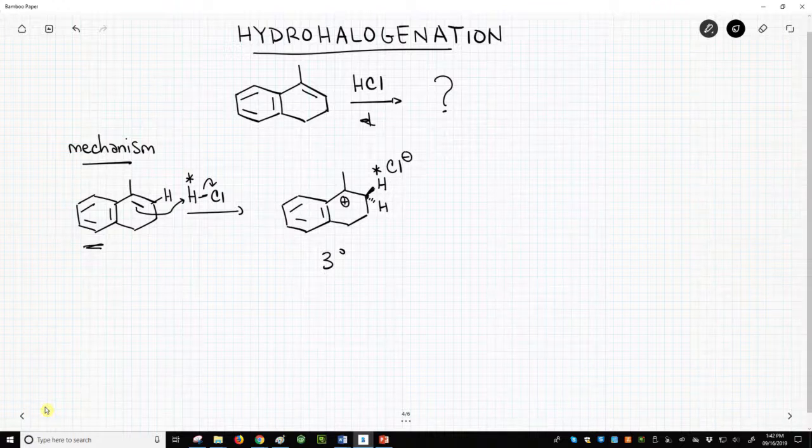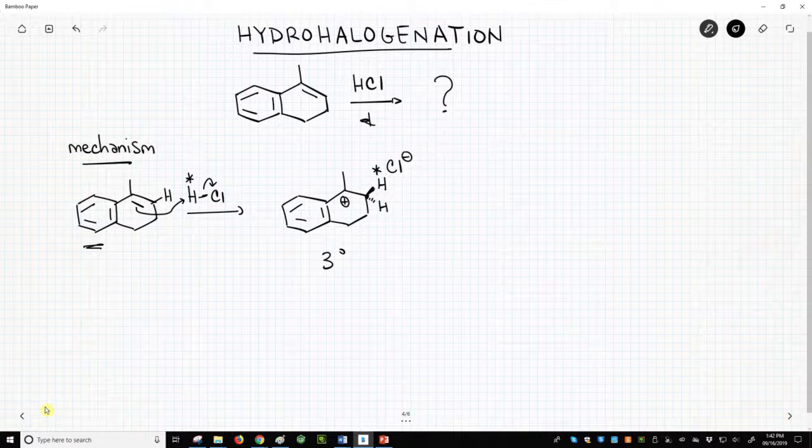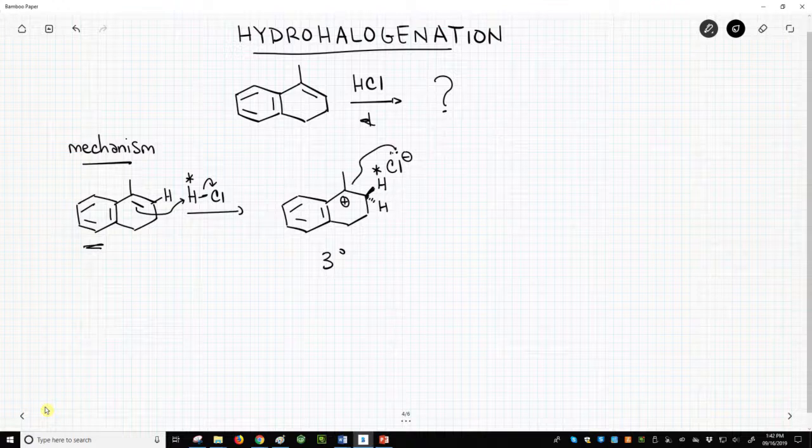What happens to carbocations? They either get attacked or lose a beta hydrogen. For these addition reactions, we'll have attack. We have a nucleophile - the chloride counterion - which attacks to complete the addition.